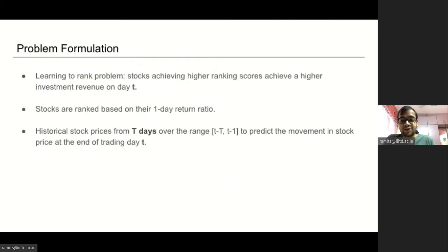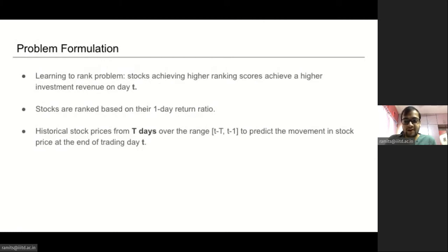We formulate the stock prediction problem as a learning-to-rank problem, where our model is directly optimized towards ranking profitable stocks. Rather than using absolute prices, we rank based on the normalized return ratio of the stock. Given stock price data from the previous T days, we aim to learn a ranking function that outputs a score to rank each stock in terms of expected profit. Based on the predicted ranking list, traders invest their money into what they believe to be the most profitable stocks.